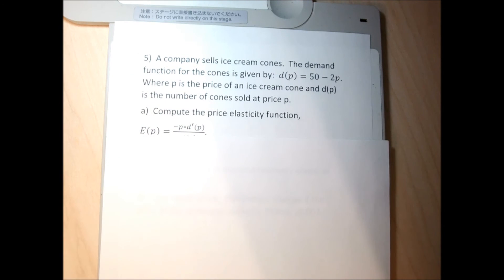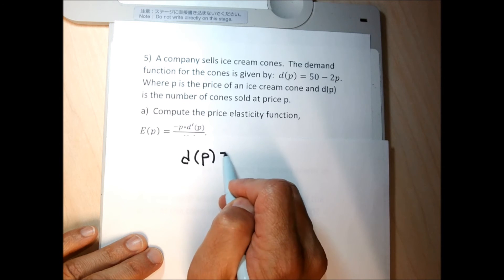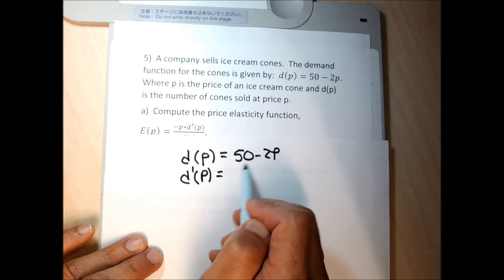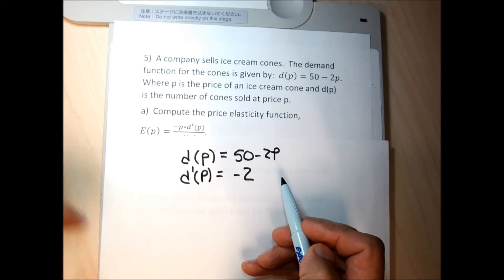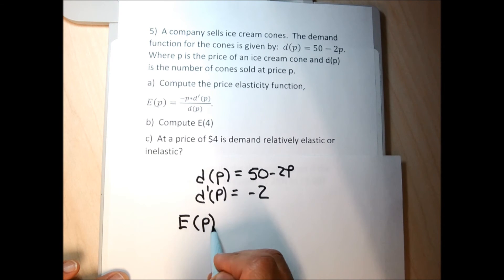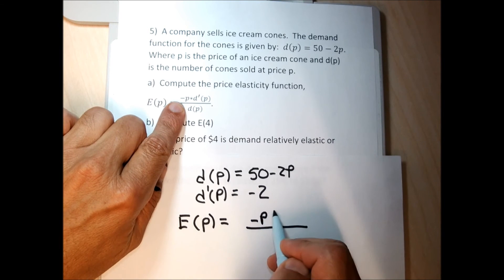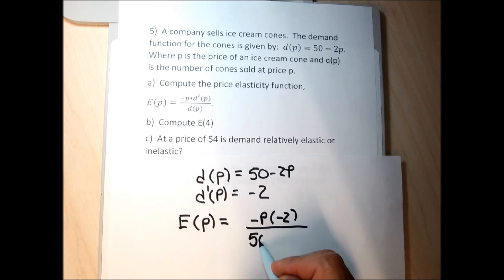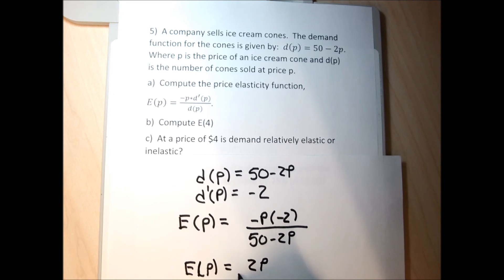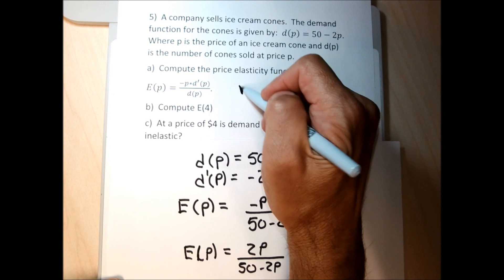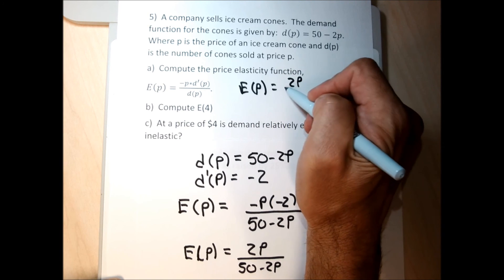Part A: produce the price elasticity function. The demand function is D(P) equals 50 minus 2P. The derivative of 50 is zero; the derivative of negative 2P is negative 2. So the price elasticity function has negative P in the numerator times the derivative negative 2, with the price demand function in the denominator. Multiplying the two negatives gives a positive, so E(P) equals 2P over 50 minus 2P.